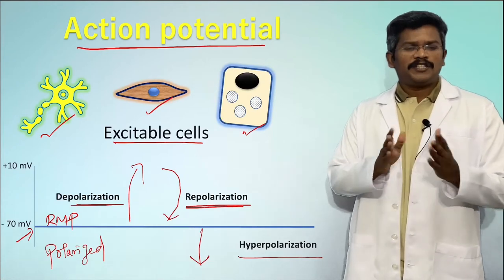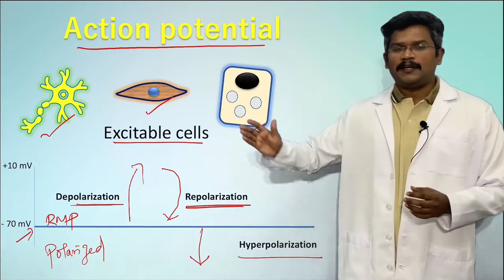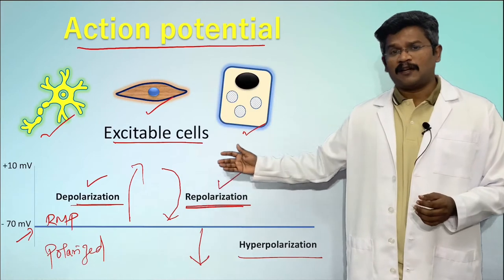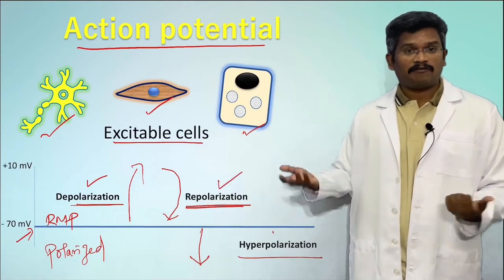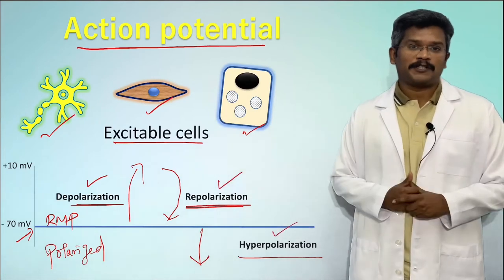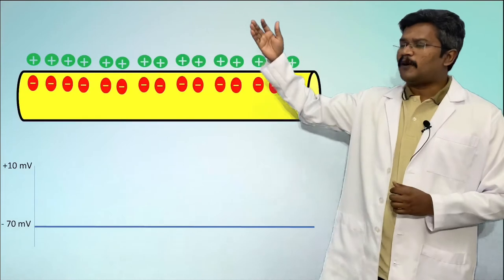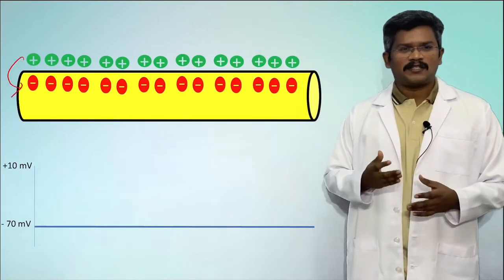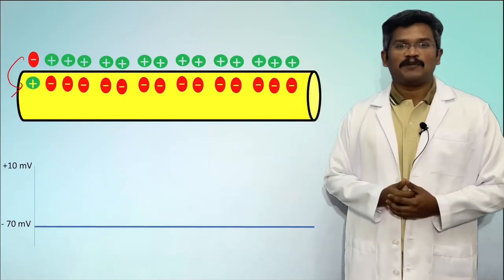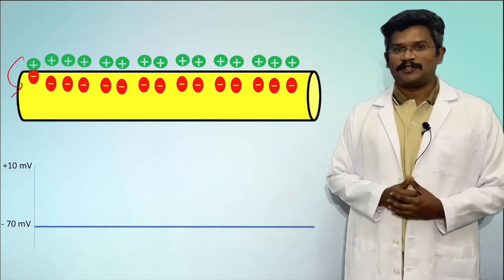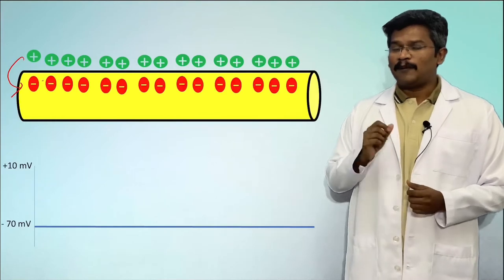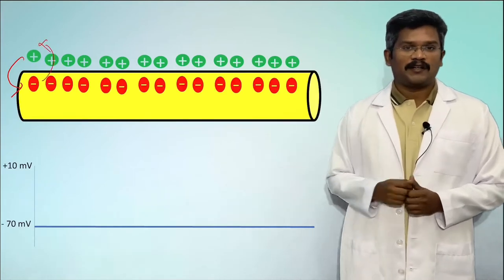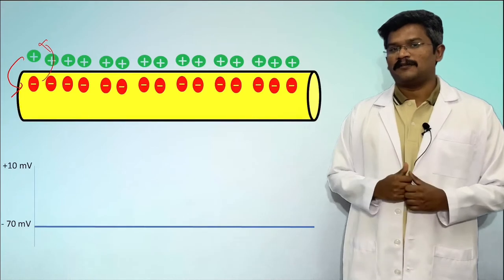In general, an action potential has depolarization, repolarization, and certain cells also have an after-hyperpolarization. The movement of positive ions inside the cell is called an inward current and is responsible for depolarization, while movement of positive ions outside is called an outward current and leads to repolarization.